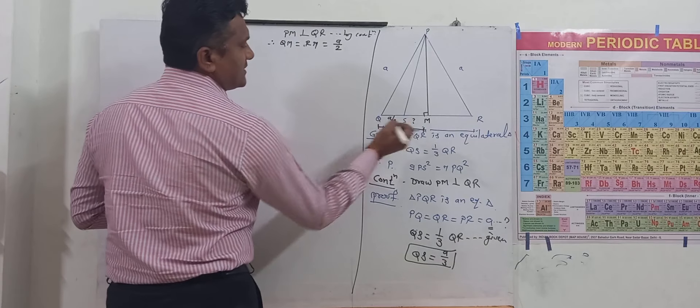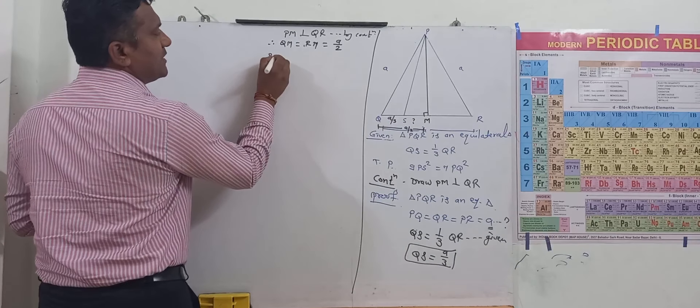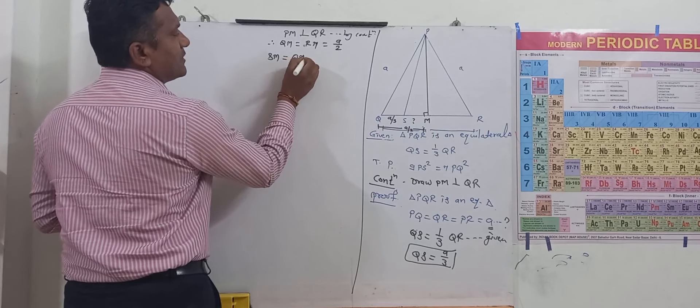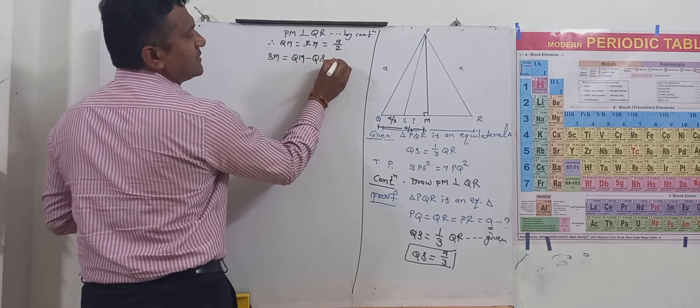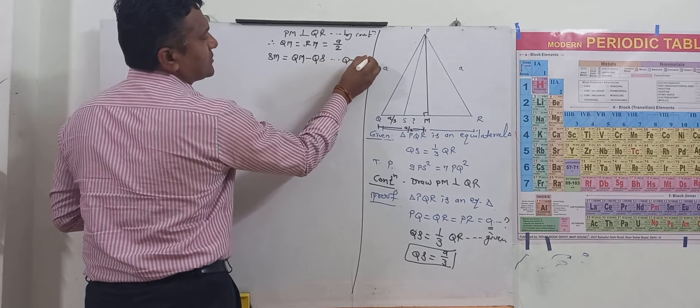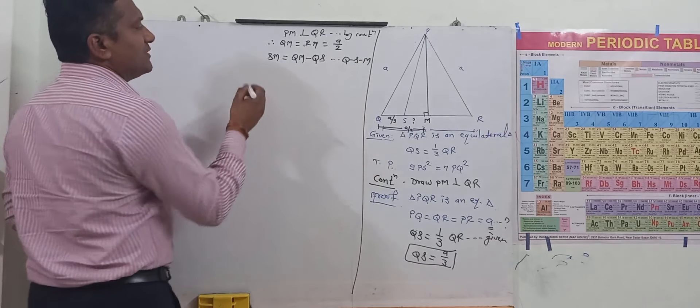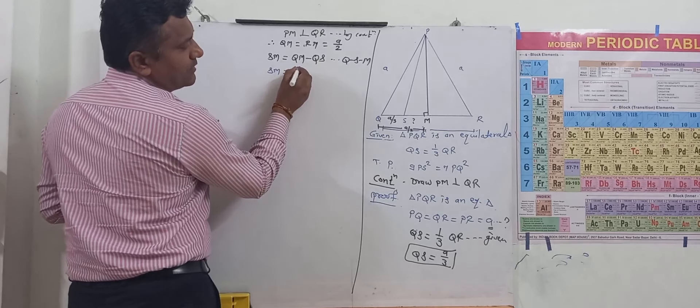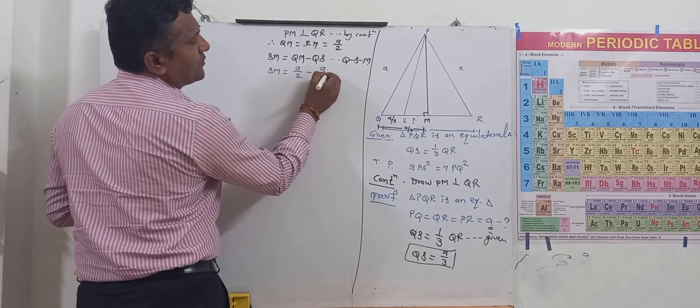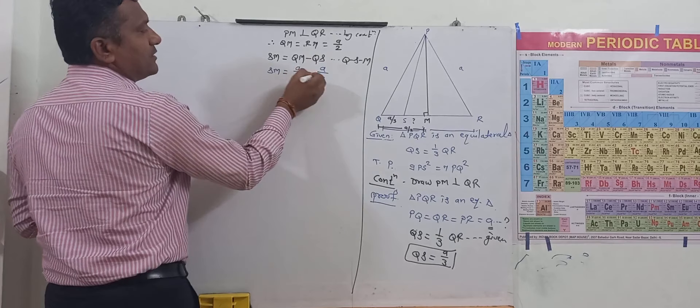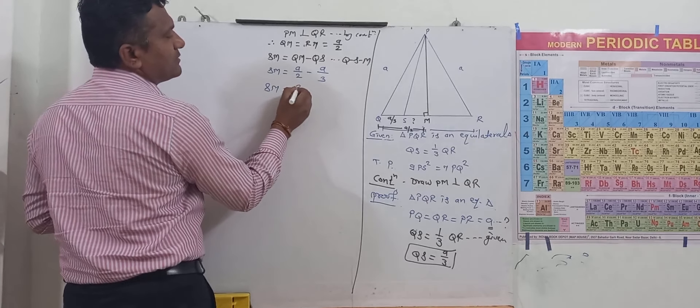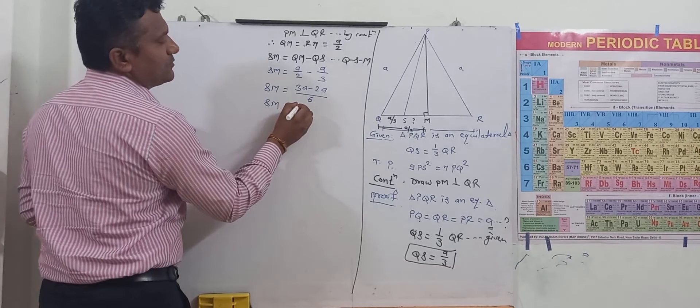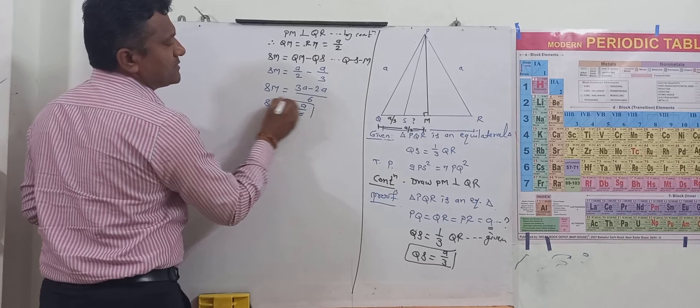Now we have to find out SM. How to find SM then? SM is QM minus QS. And then substitute the value, that SM equal to QM which is A by 2 minus QS is A by 3. Then cross multiply, so SM equal to A by 6.